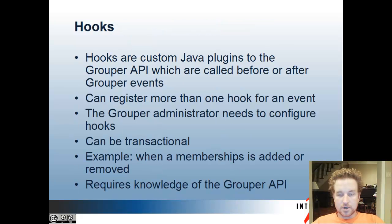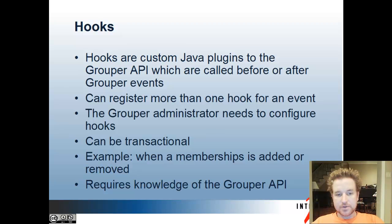Grouper hooks are custom Java plugins to the grouper API that are called before or after certain grouper events occur — for instance when a group is added or deleted — and you can register more than one hook for that type of event. The grouper administrator needs to configure these hooks into the system. They can be transactional so that if the hook fails, whatever action it was would also fail, so you could use it for a veto. An example is when a membership is added or removed, you might want to provision somewhere else or enforce some condition. Writing hooks requires knowledge of the grouper API.